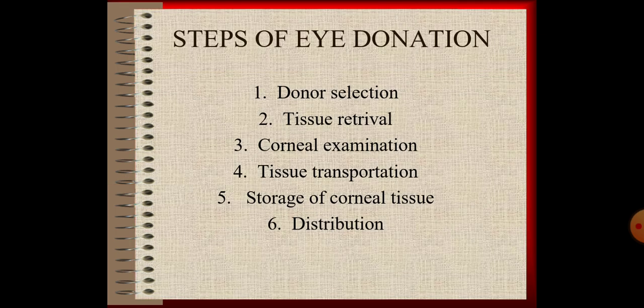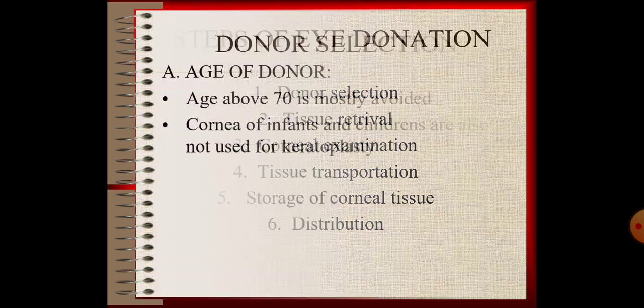What are the steps of eye donation? First, donor selection. Next, tissue retrieval, corneal examination, tissue transportation, storage of corneal tissue, and distribution. Let's see each one of these steps.